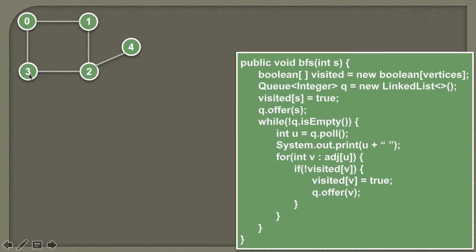From three there is an edge to two, and from one there is an edge to two, so node two is at level three and will be visited after one and three. Node four is connected to two, so it is at level four and will be visited after two. So zero is at level one, one and three are at level two, two is at level three, and four is at level four. Using breadth first search, we can traverse the graph level by level.